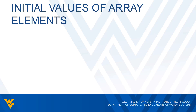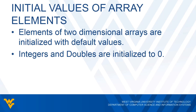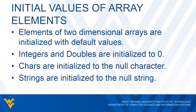I want to mention that whenever we declare an array, the elements will be initialized to their default values — just like with one-dimensional arrays. Depending on the data type, the elements are given the default value for that type. For integers and doubles, all elements are initialized to zero. For character arrays, elements are initialized to the null character. And for string arrays, all elements are initialized to the null string.